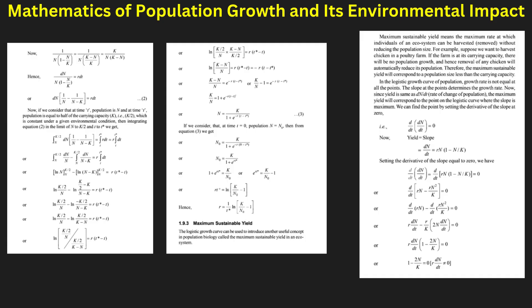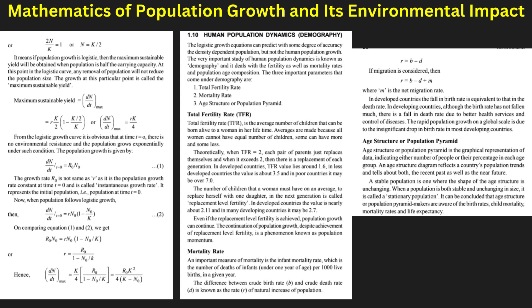Birth and death rates, migration, and fertility rates influence demographic trends. Overpopulation intensifies climate change and loss of biodiversity. Environmental engineers study these trends to develop sustainable solutions. Population control measures like education and resource management help in mitigating environmental stress. Integrating technology with conservation ensures a balanced population-resource dynamic. In this portion, numerical questions on population growth can be asked in university examinations.